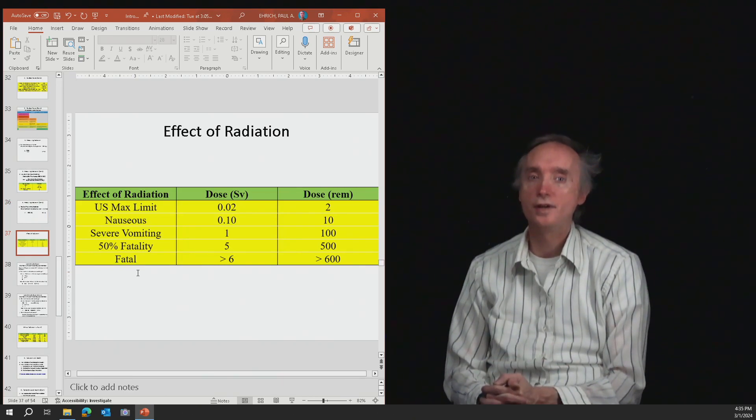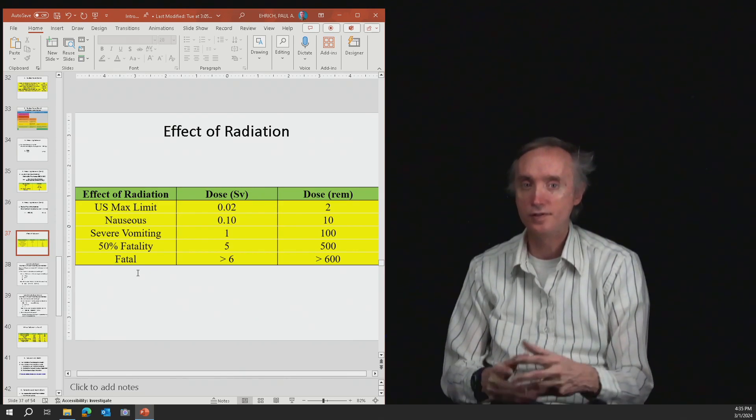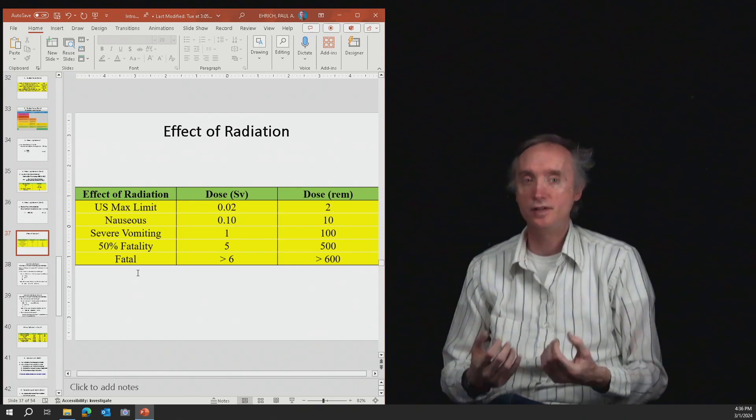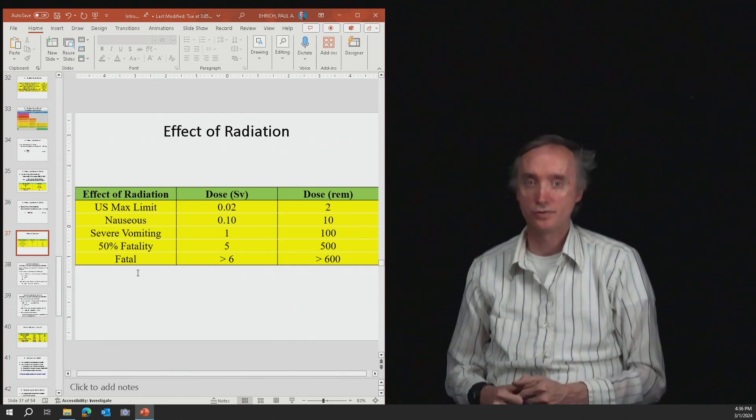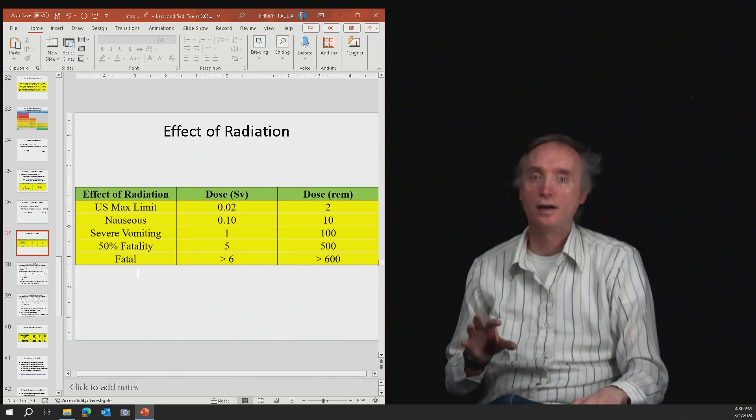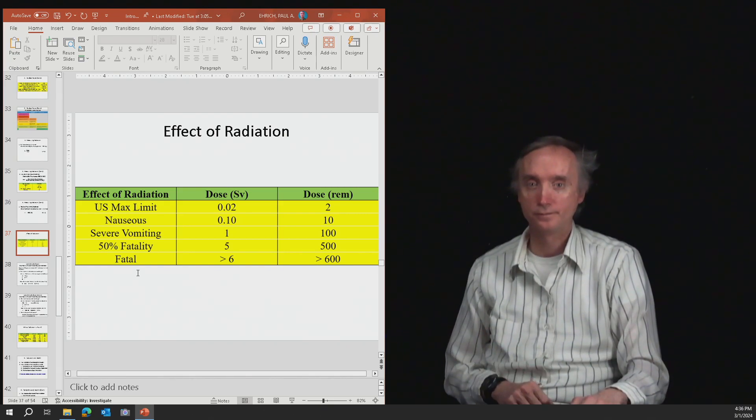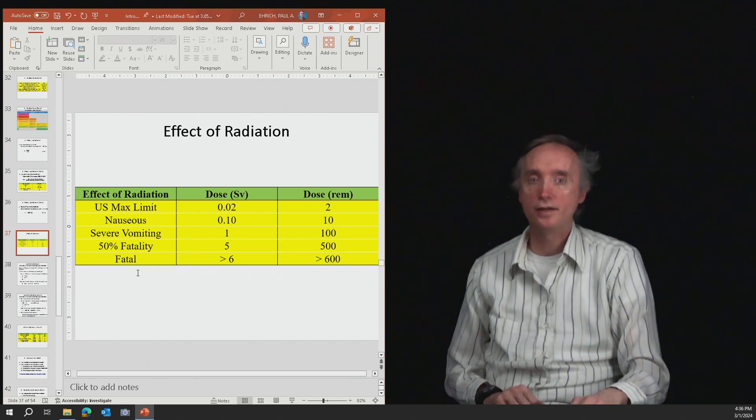So what does radiation do to you? So if you receive a certain amount of sieverts, what would happen to you? The first one is the maximum amount of radiation that people in the United States are allowed to get is 0.02 sieverts per year. If you get 0.1, so that's going to be five times that dosage, then you're going to start to get sick to your stomach.